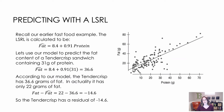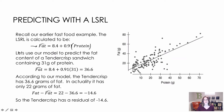We have this example from earlier when we were looking at the protein and fat content of various fast-food items. The equation is: fat-hat equals 8.4 plus 0.91 times protein. We're going to use our model first to predict the fat content of a Tender Crisp sandwich containing 31 grams of protein.